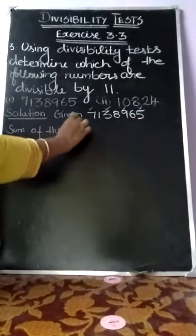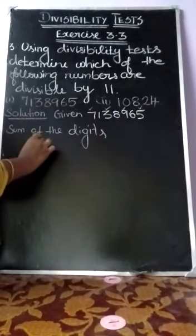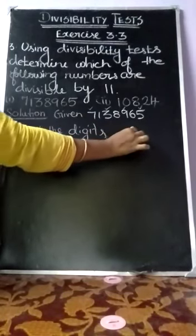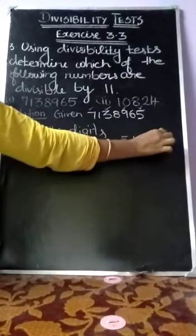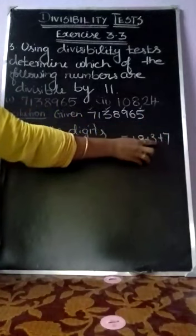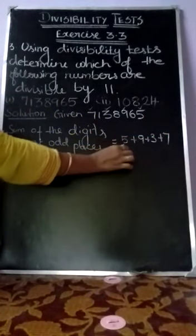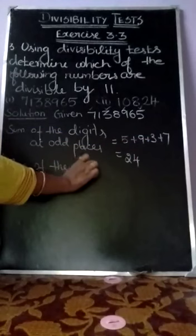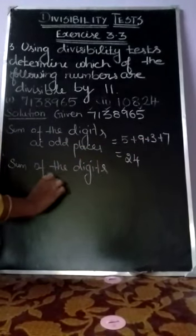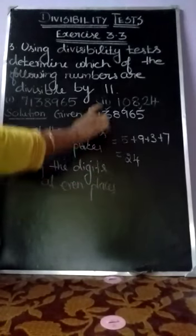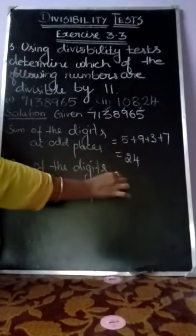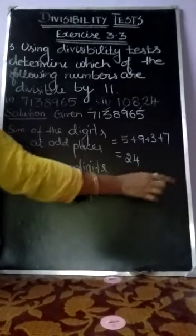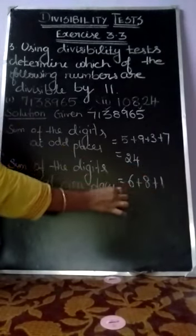Sum of the digits at odd places: the values are 5 plus 9 plus 3 plus 7. Adding: 7+3=10, 10+9=19, 19+5=24. Next, sum of the digits at even places — even places are 2nd, 4th, and 6th. 2nd place value is 6, 4th place value is 8, 6th place value is 1. So: 6+8=14, 14+1=15.